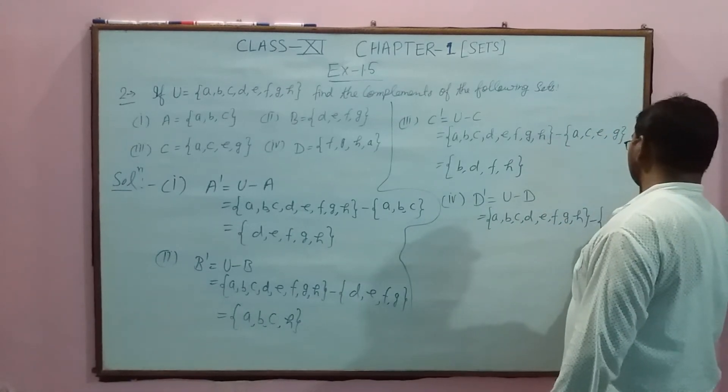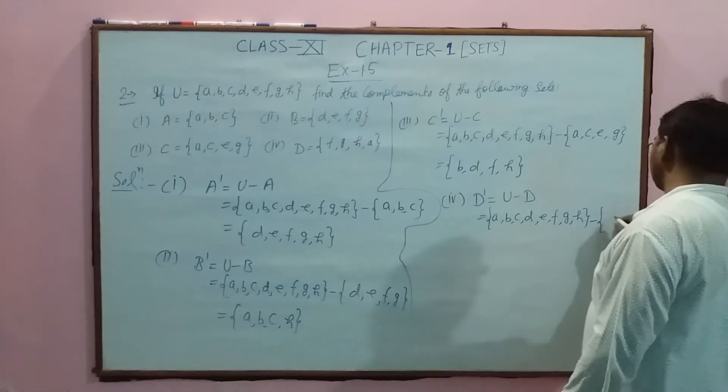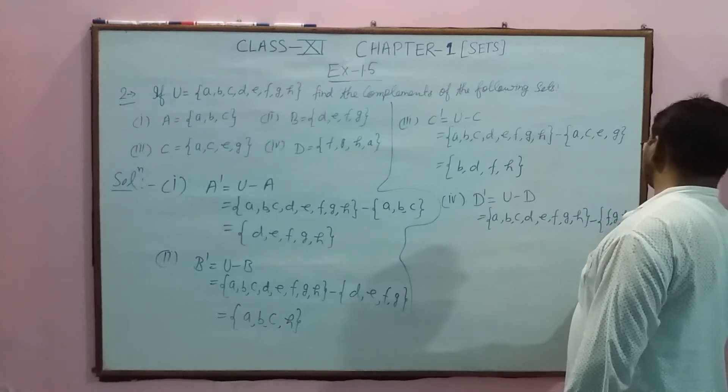Part (d): U minus D. D contains {f, g, h}, so the complement is {a, b, c, d, e}.